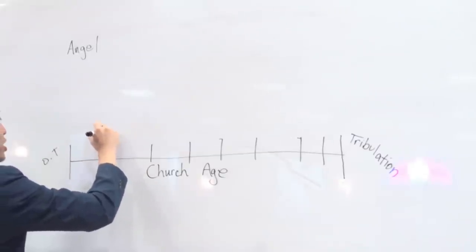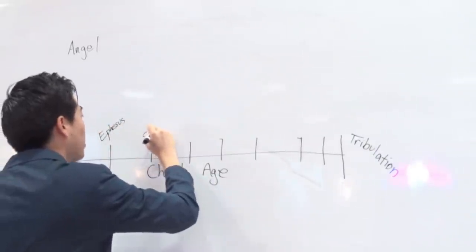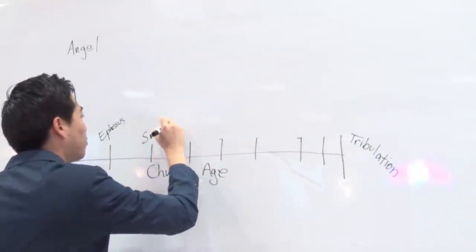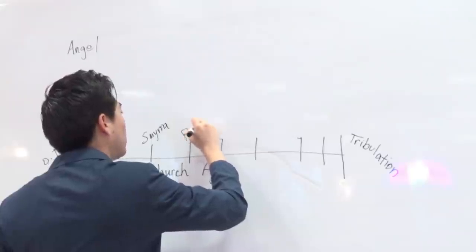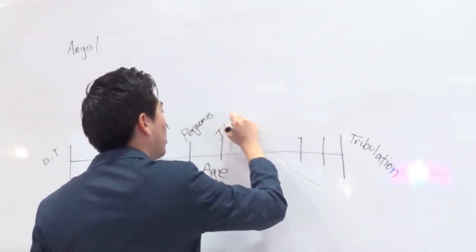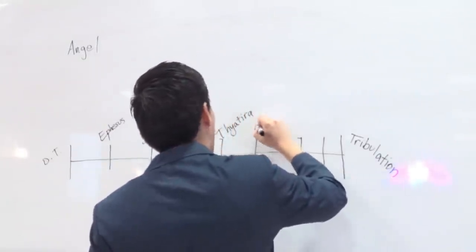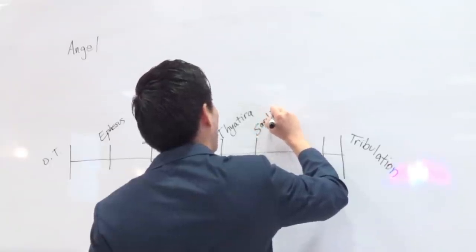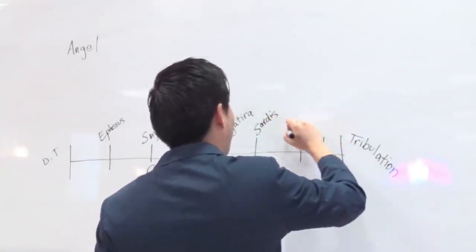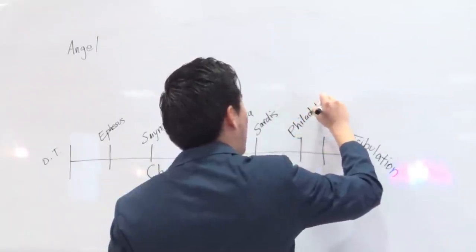Right here is the church of Ephesus. Right here is Smyrna, Pergamos, Thyatira - so it will be written out here so don't worry, you're not missing out on anything - Thyatira, Sardis, Philadelphia, and Laodicea.